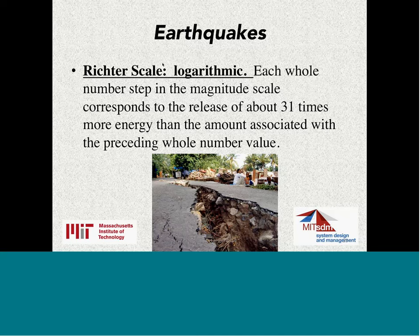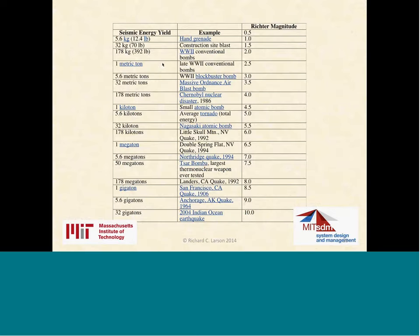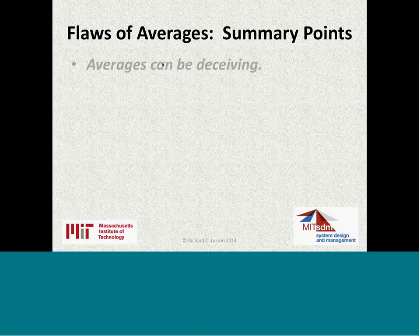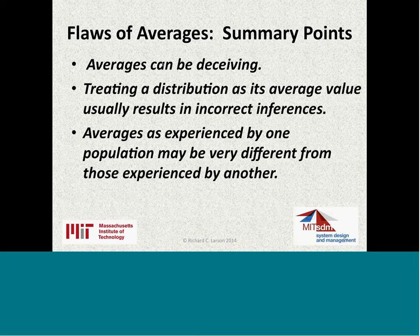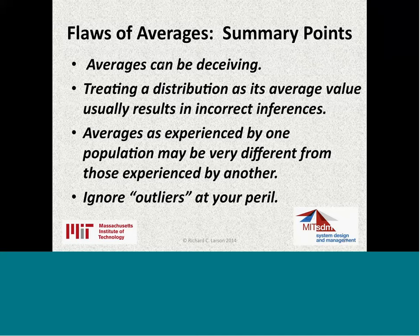The Richter scale is logarithmic — each time you go up by one integer, you have 31 times more energy than the previous whole number value. The 2004 Indian Ocean earthquake was 32 gigatons of energy — Richter scale 10. These are rare but they occur and cannot be ignored. When you take out outliers, you're taking out major information of major consequence. Summary: averages can be deceiving. Treating a distribution at its average value usually results in incorrect inferences. Averages experienced by one population may be very different from another. And you ignore outliers at your peril.